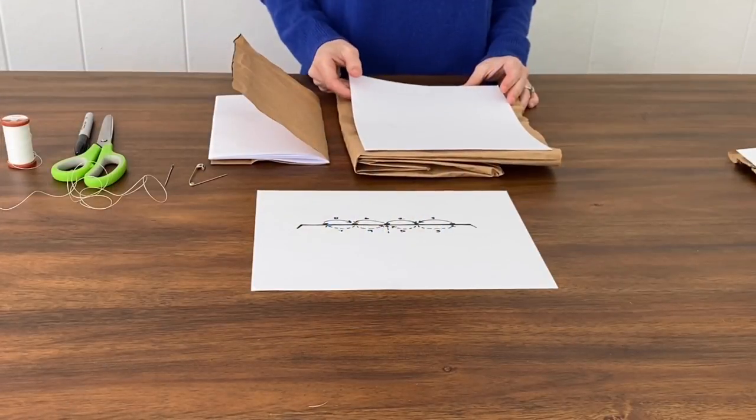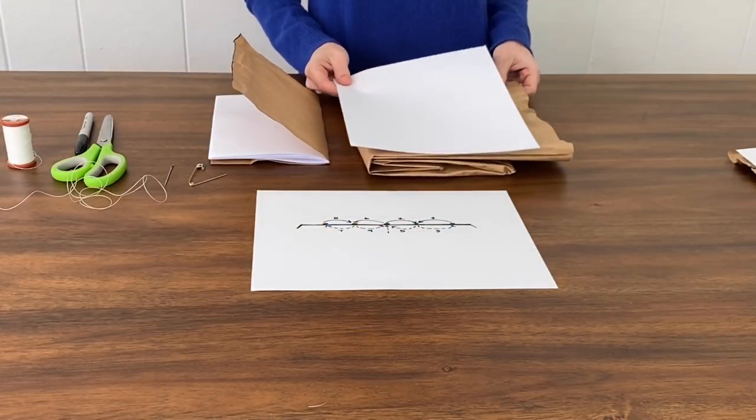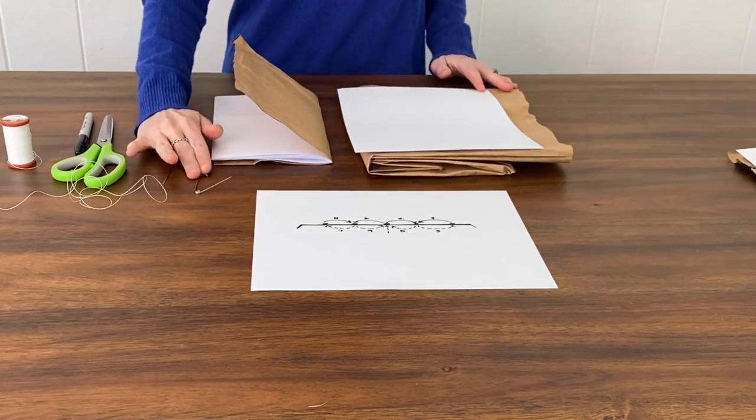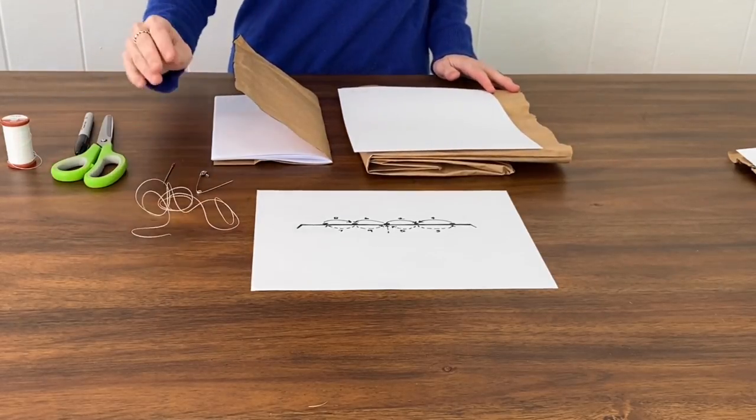Today we're going to use some simple materials to make our own nature journals just like Beatrix Potter did. So let's get started. In your kit you have some paper and a paper bag as well as a needle, a safety pin, and some thread.